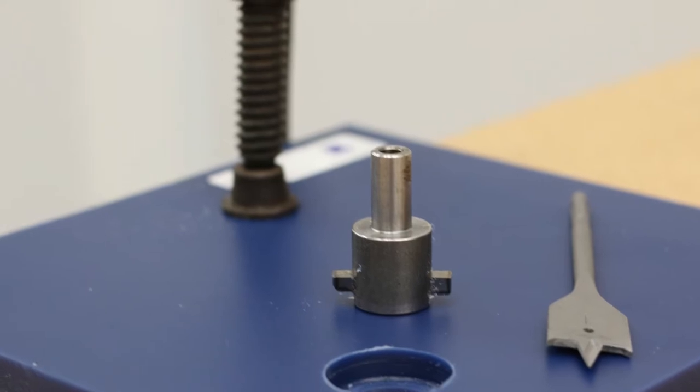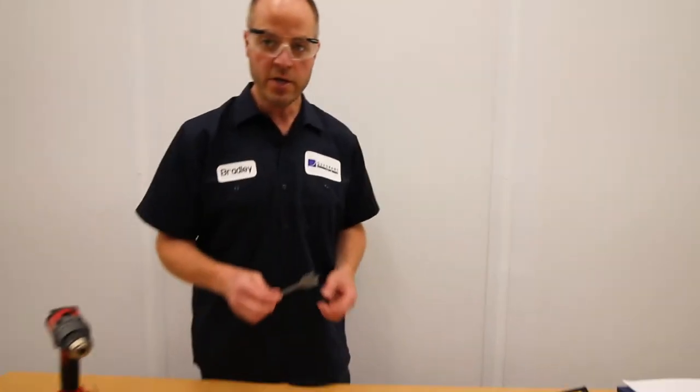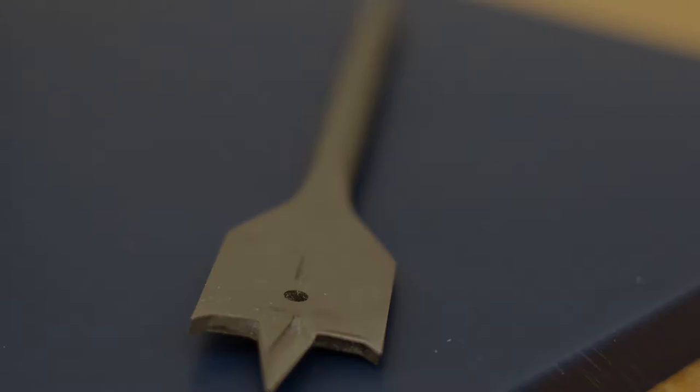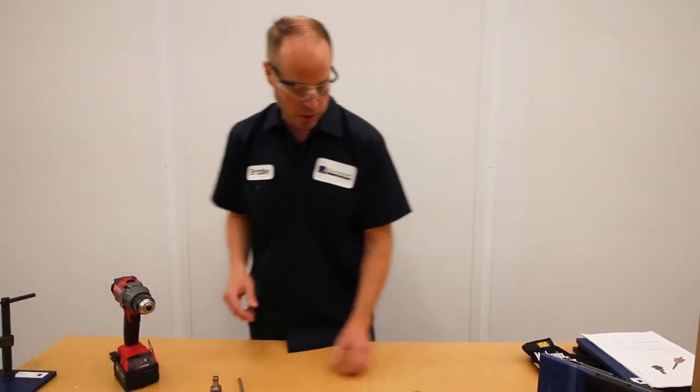The Weld Washer Counterbore Tool Kit consists of two items: a one-inch spade bit along with our counterbore tool. What you will use this counterbore tool kit for is to create a counterbore hole for the Weld Washer Fastening System.